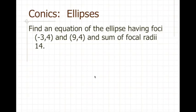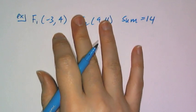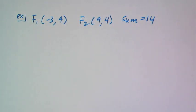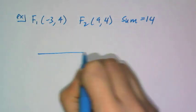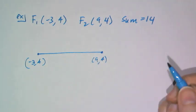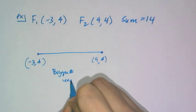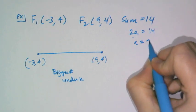For the final example, let's find an equation of the ellipse having foci at negative 3, 4 and 9, 4, where the sum of the focal radii is 14. The foci are horizontally aligned, which means the bigger number goes under x. The sum 14 represents 2a, so a equals 7.